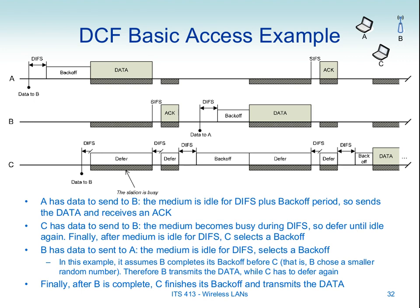In summary, the basic steps are: medium must be idle for DIFS, then idle for the back-off, then transmit the data. The receiver waits SIFS (no need for the medium to be idle — it just waits) and sends the ACK. If DIFS is interrupted, wait until medium is idle and restart from the start. If back-off is interrupted, wait for idle, complete DIFS, and continue the remaining back-off slots.